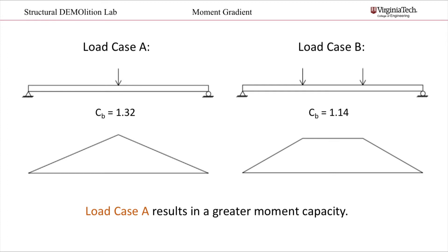Here are the moment diagrams for each load case. As you can see, load case B has a portion with uniform moment. This is why it has a factor closer to one. Therefore, load case A results in a greater moment capacity.